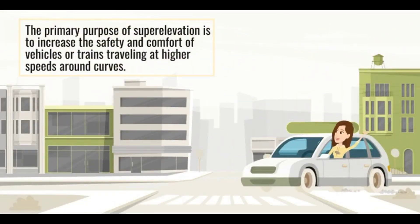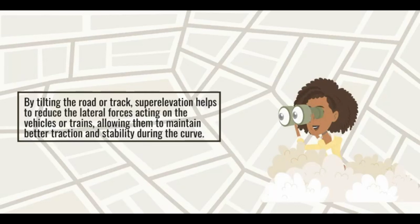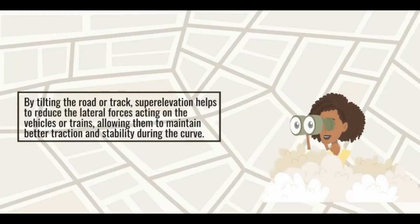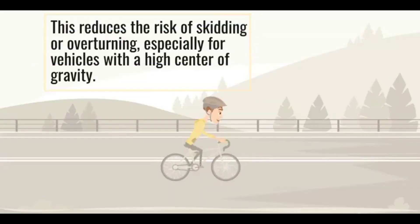The primary purpose of super elevation is to increase the safety and comfort of vehicles or trains traveling at higher speeds around curves. By tilting the road or track, super elevation helps to reduce the lateral forces acting on the vehicles or trains, allowing them to maintain better traction and stability during the curve. This reduces the risk of skidding or overturning, especially for vehicles with a high center of gravity.